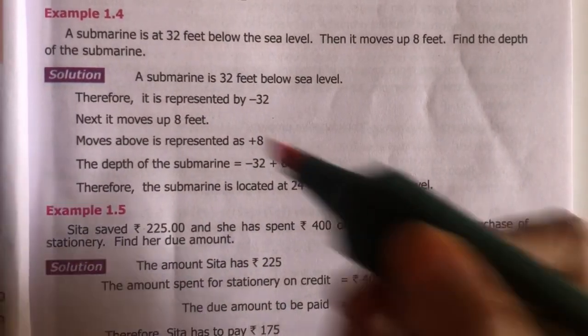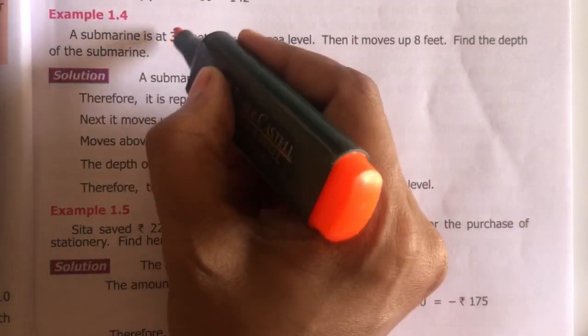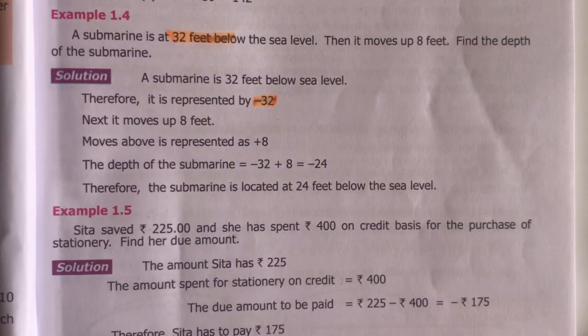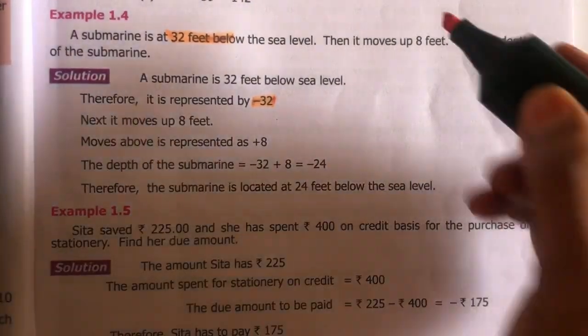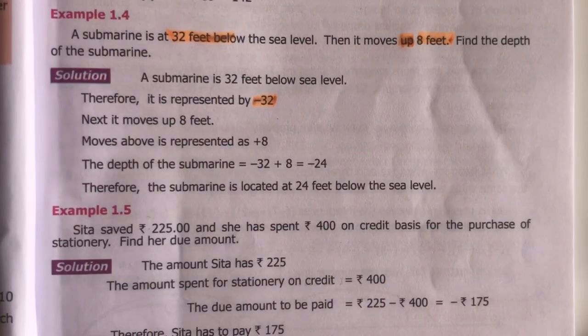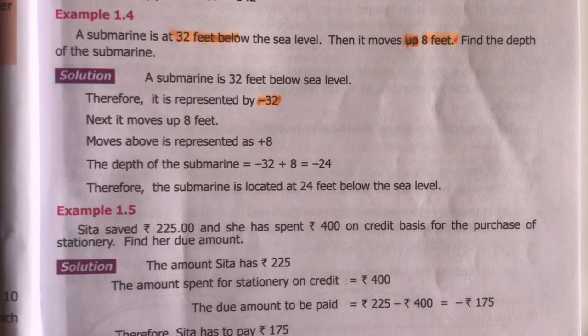So 32 feet below, it is minus 32. Then, it moves up 8 feet, up not down up. So, it travels in the opposite direction. It moves up.